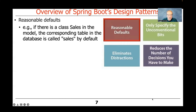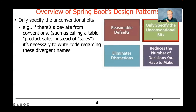Here are some things that fall under the convention over configuration pattern. One is to have reasonable default behavior. For example, if you have a model defining the persistence portion of your architecture — things you want to persist between runs — if there's a class called 'sales' in the model, there should be a corresponding table in the database called 'sales' by default. This is sometimes called the principle of least surprise. However, if you want to call it 'product_sales' instead, there should be a way to configure that association differently.